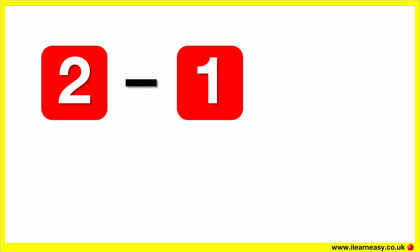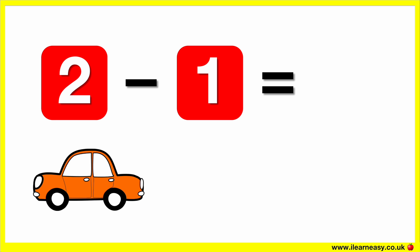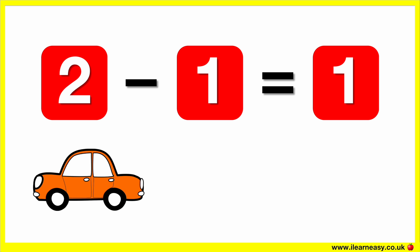Two minus one equals. Here are two cars. Let's take away one car. Now there is one car. So, two minus one equals one.